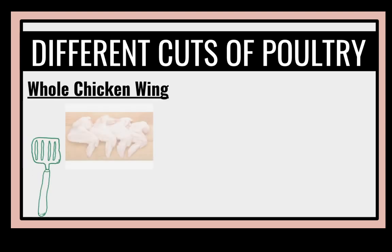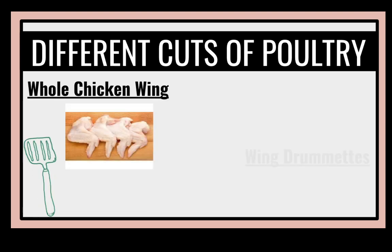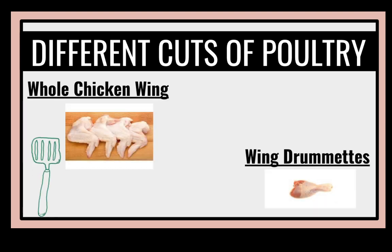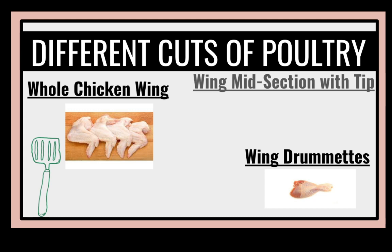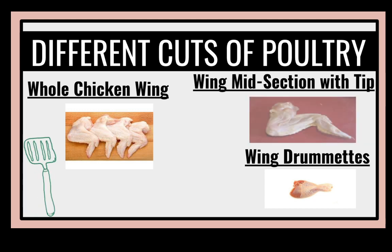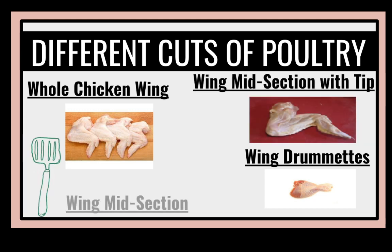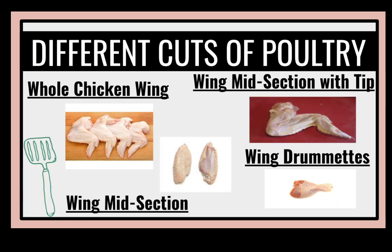Whole chicken wing consists of: wing drumettes, wing midsection with tip, and wing midsection. These are the front cuts of wings.